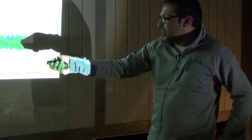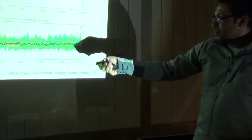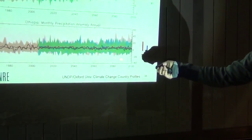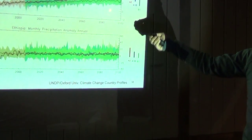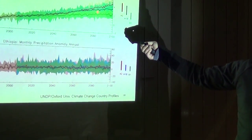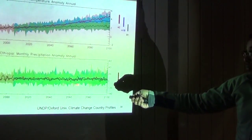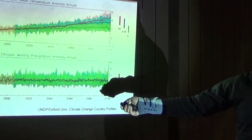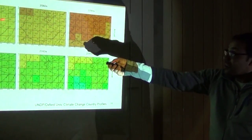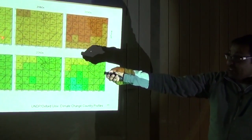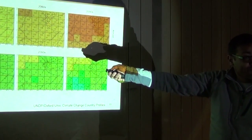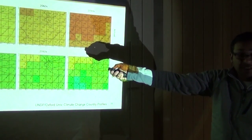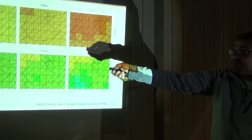What does that mean? If you look at the rainfall anomalies, it doesn't look like Ethiopia is going to get wetter, but it's going to become warmer. What's the periodicity of this? Remember I asked Lee about the grid cells? This is how big a grid cell is — this is on the global climate model.